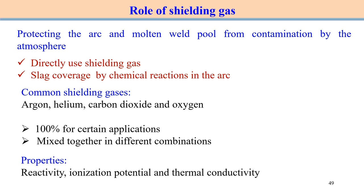Apart from this, sometimes we can use carbon dioxide and oxygen — not to produce oxides, but in small quantities or small percentages just to protect the molten material. In some cases, this kind of sealing gas also helps to stabilize the arc. That is why sometimes we use argon and helium as the main sealing gas with a certain small percentage of carbon dioxide or oxygen mixed in. The primary function of the sealing gas is sealing, but the secondary function is to stabilize the arc during the arc welding process.